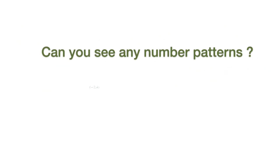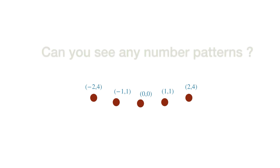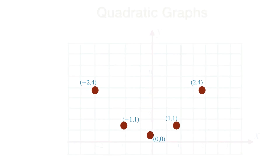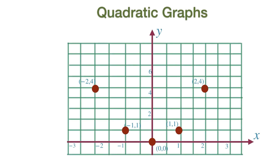Take a look at these coordinates. Can you see any number patterns between the X and Y coordinates? How about if I plot this into a graph and join the line with a smooth curve? Are these patterns more clear?